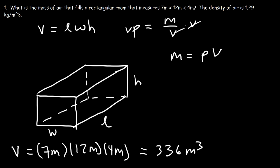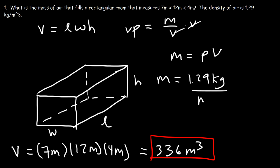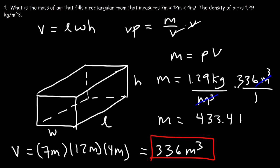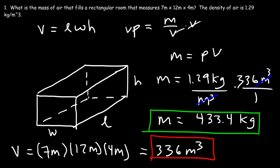Now we can calculate the mass of air. The mass is the density, which is 1.29 kilograms per cubic meter, multiplied by the volume, which is 336 cubic meters. The units of cubic meters cancel, giving us kilograms. So it's 1.29 times 336, and the mass of air in this large room is 433.4 kilograms.